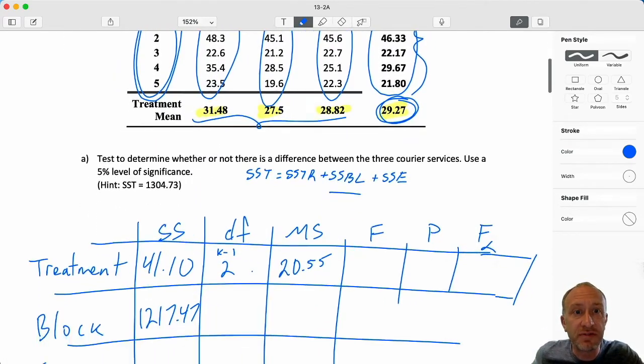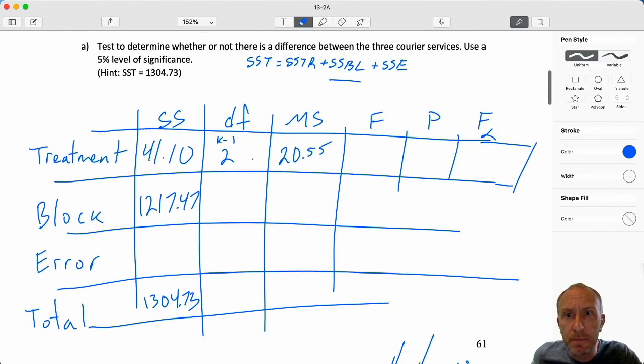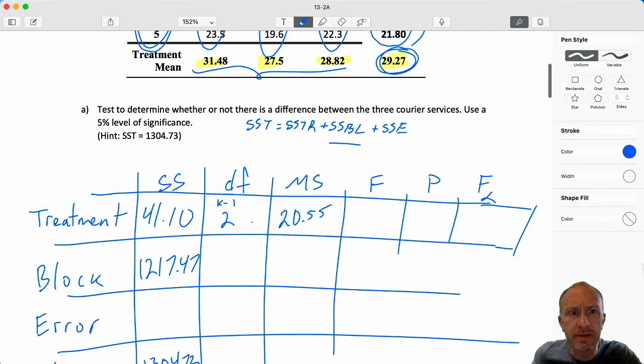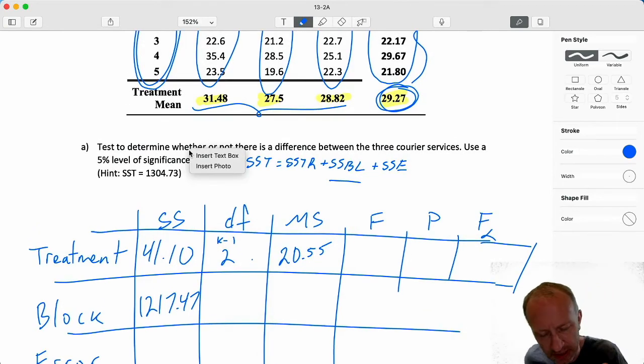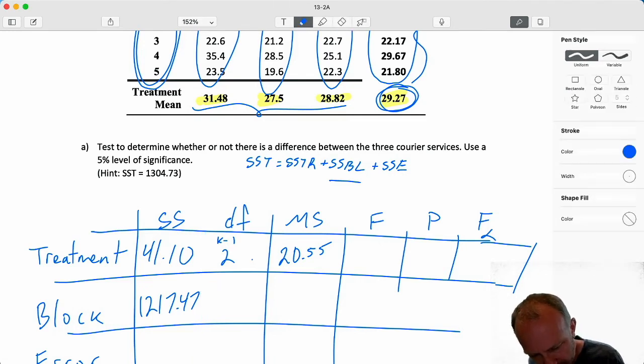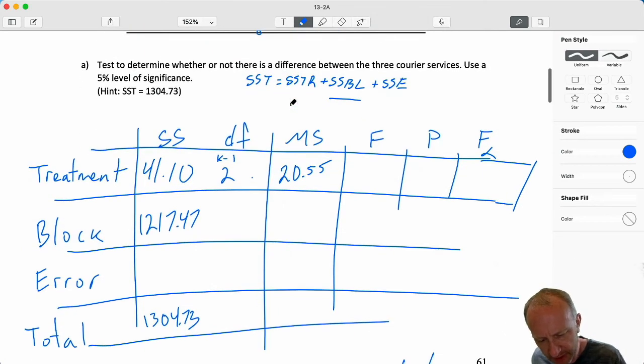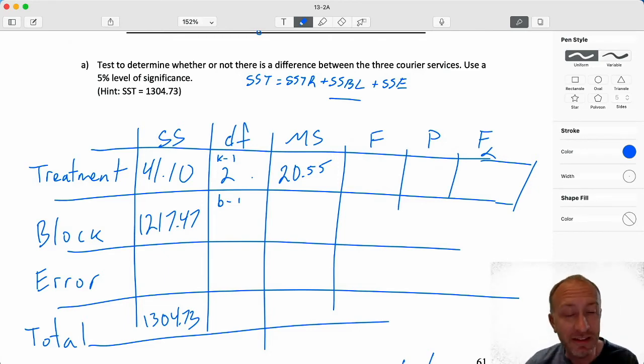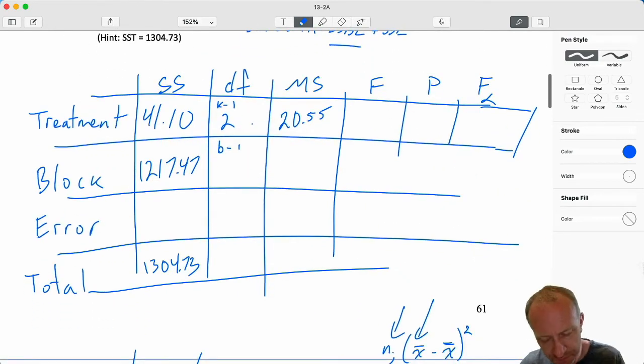Okay, let's do this. 26.37 minus 29.27 squared plus 46.33 minus 29.27 squared plus 22.17 minus 29.27 squared plus 29.67 minus 29.27 squared plus 21.8 minus 29.27 squared times three. And that gives me 1217.47. Okay, good. Now our degrees of freedom for blocks. This one's a little bit different, but it's again nothing too complicated. This is just simply b minus one. So b, the number of blocks that we have. Here I have five blocks. So b minus one is five minus one is four.